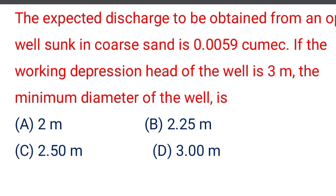Next question: the expected discharge to be obtained from an open well sunk in coarse sand is 0.0059 cubic meter. If the working depression height of the well is 3 meters, the minimum diameter of the well is — option A 2 meter, option B 2.25 meter, option C 2.50 meter, option D 3 meter. The correct answer is option D, 3 meter.